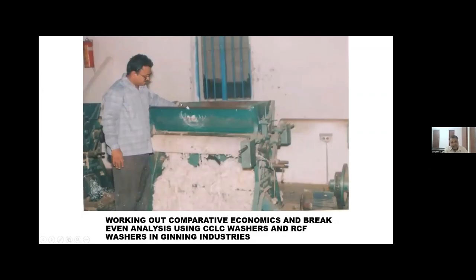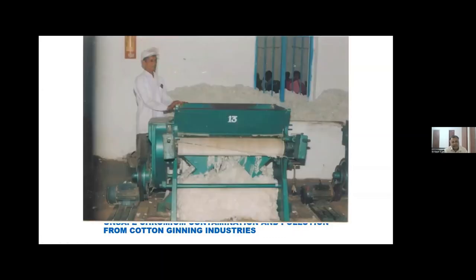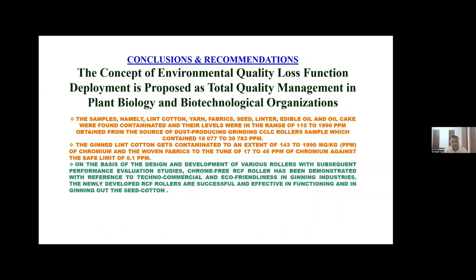The improved ginning method has been implemented in the cotton ginning environment. The concept of environmental quality loss function deployment — with respect to air pollution, water pollution, and land degradation — is proposed as total quality management. This management approach is called cross-functional organizational method in plant biology, biotechnology, and organizations.